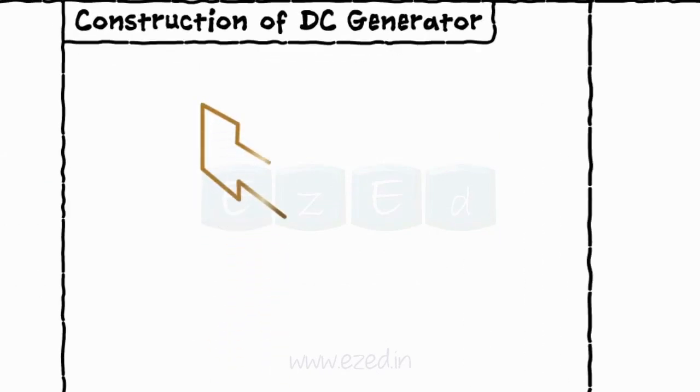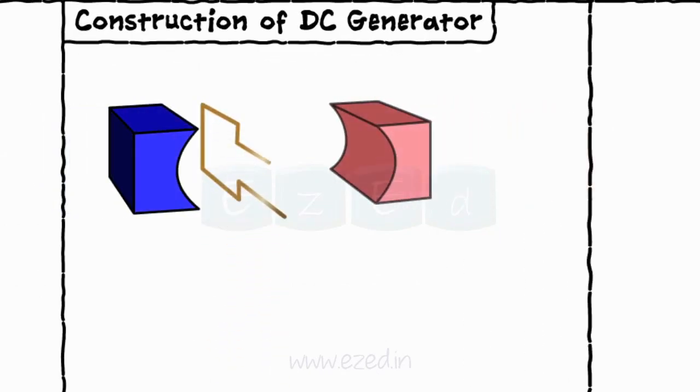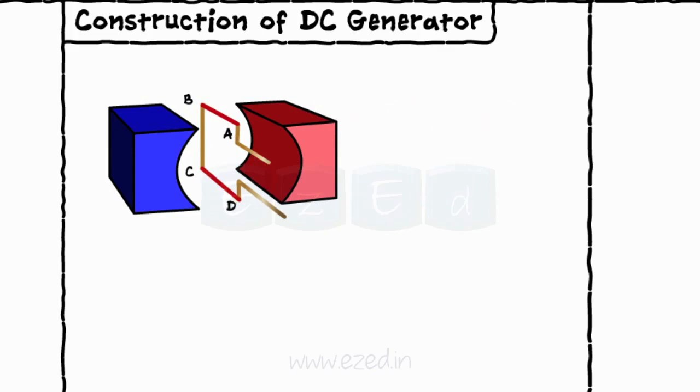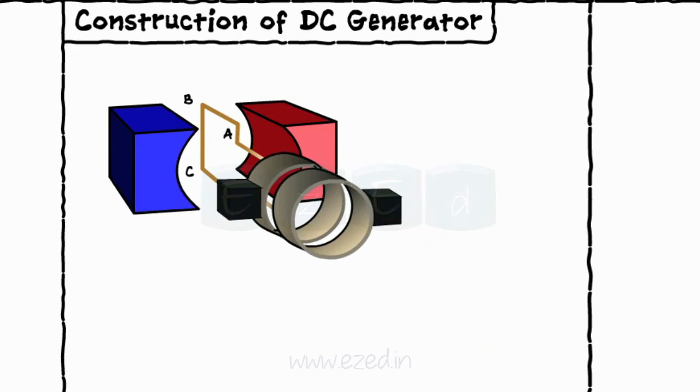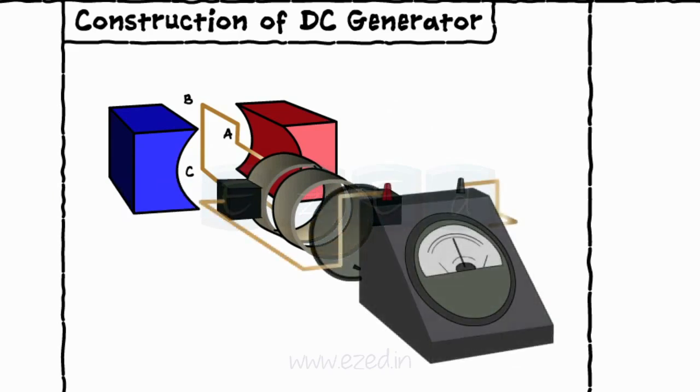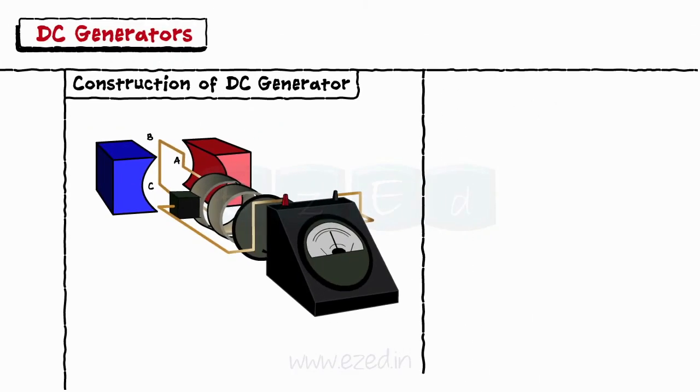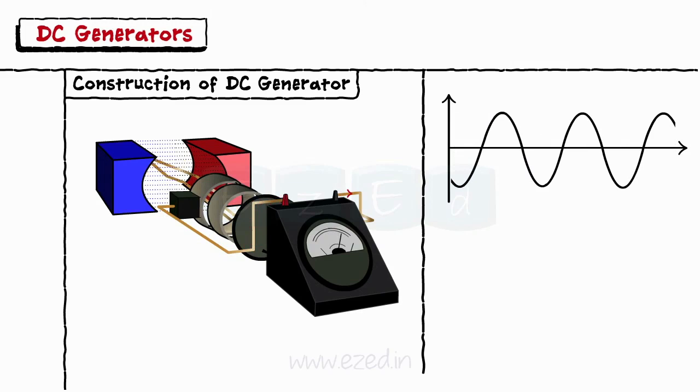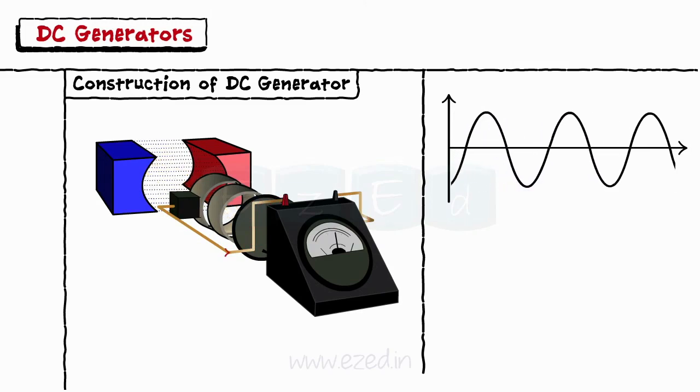The DC generator is constructed by keeping the two conductors AB and CD between two magnets. Both these conductors are connected to the commutator and the brushes are mounted on the surface of these commutators to which the external circuit is connected. Whenever the conductors cut the magnetic flux lines, the EMF is induced that causes the current to flow through the load circuit.